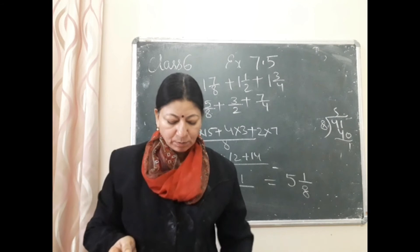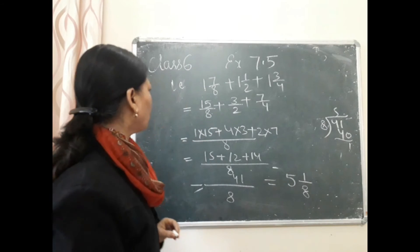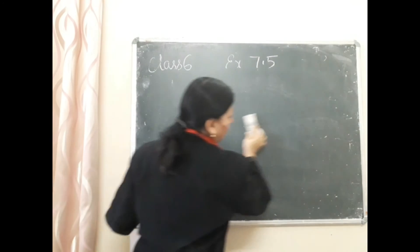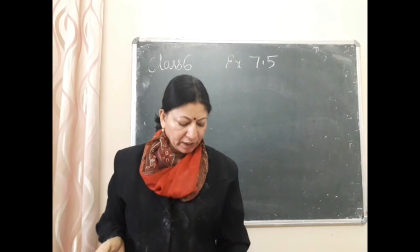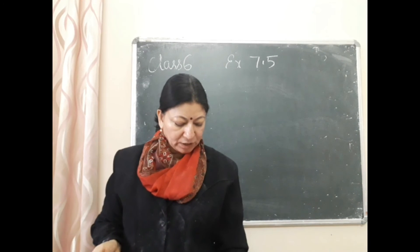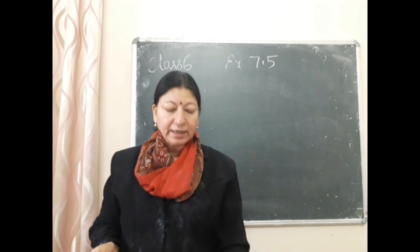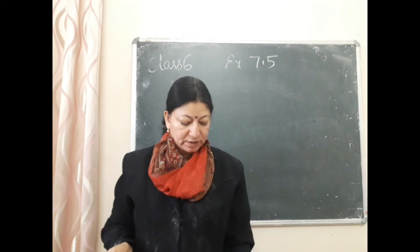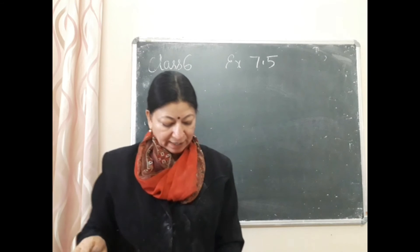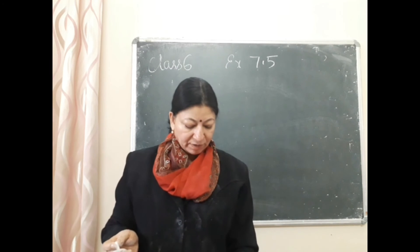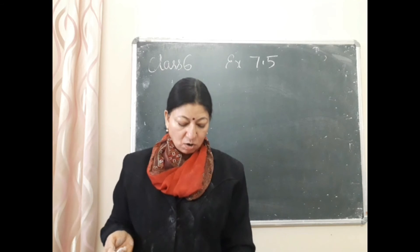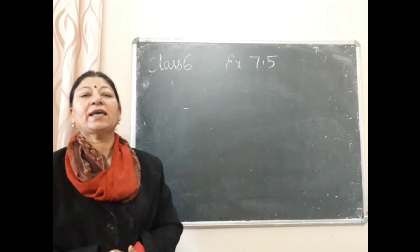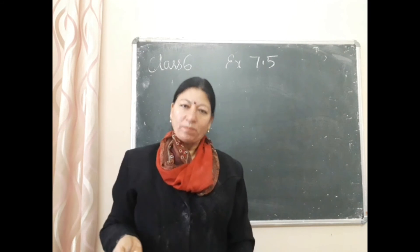इसके बाकी question आपको खुद करने हैं। Question number 2: Mohini brought 5 1/2 meter of cloth for her kurta and 3 2/3 meter for her pyjama — how much cloth did she purchase in total? उसने 5 1/2 और 3 2/3 meter कपड़ा खरीदा, कुल कितना — दोनों को plus करेंगे।